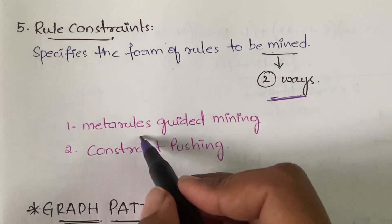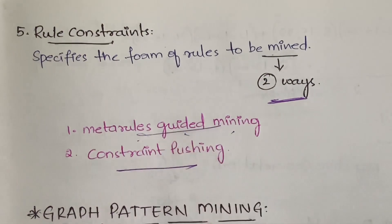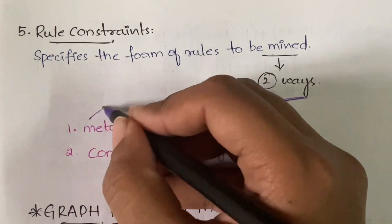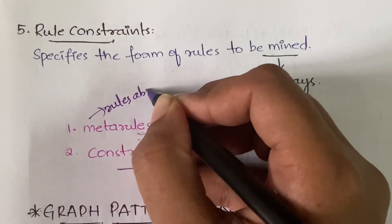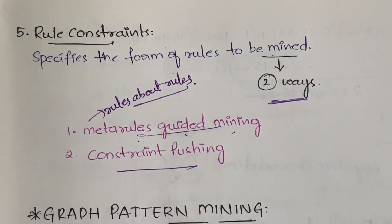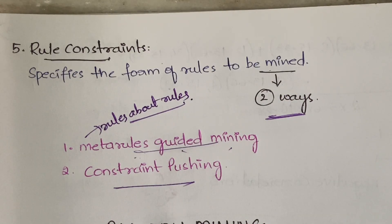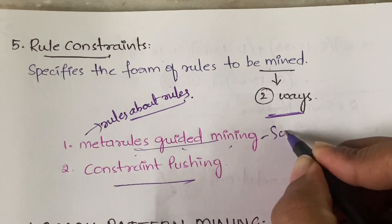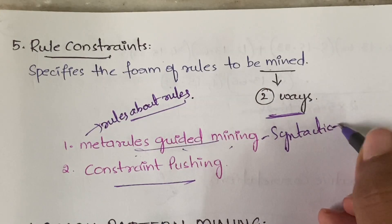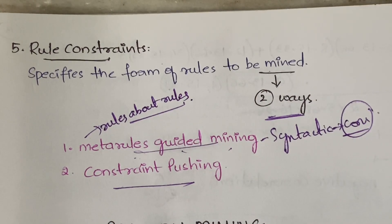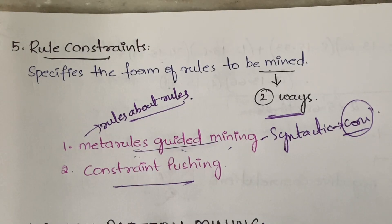When you are mining using rule constraints, you can do it in two ways: meta-rule guided mining and constraint pushing. Meta-rule guided mining — a meta rule is nothing but rules about rules. In meta-rule guided mining, it will allow users to specify the syntactic form of rules in the form of constraints. The rule acts as a constraint — the syntax of the rule is expressed in the form of a constraint.